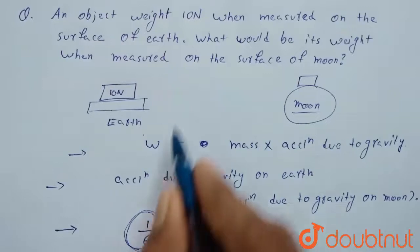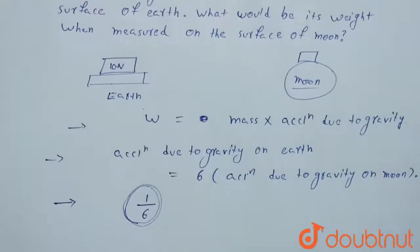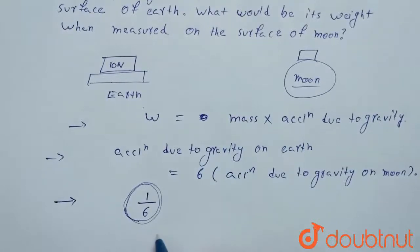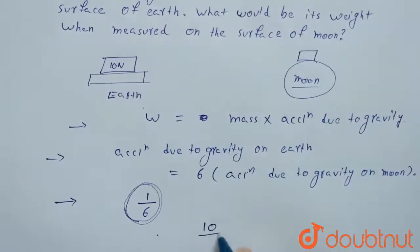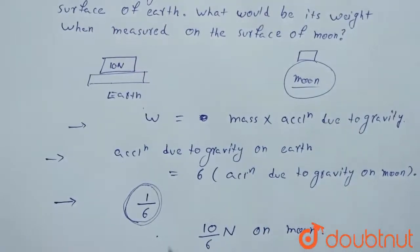So our object is 10 Newton on earth. So what will be its weight on moon? So its weight will be 1 by 6 of 10 Newton. That is 10 by 6 Newton when it will be measured on moon. So this will be weight of object on moon.